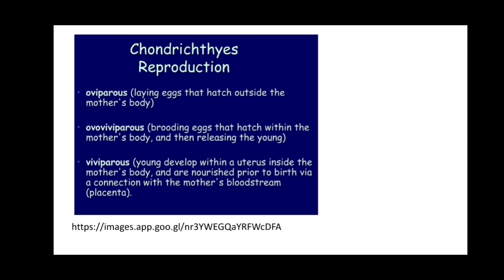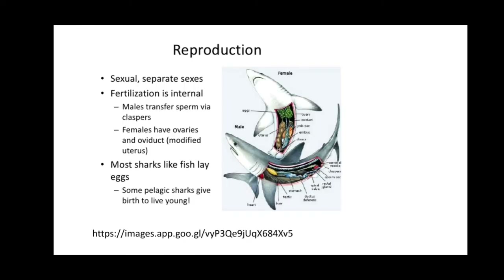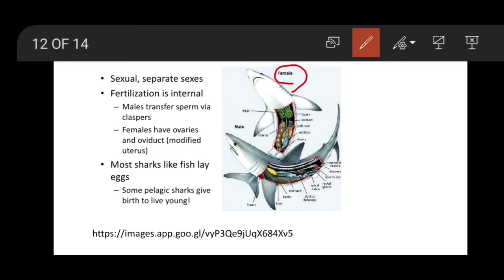Ovoviviparous organisms brood eggs that hatch within the mother's body, then release the young ones — snakes and some fishes are examples. Viviparous organisms have young that develop within the uterus inside the mother's body and are nourished via connection with the mother's bloodstream through the placenta. Male and female sexes are separate. The ovary and testes of the shark can be seen in the diagram. Fertilization is internal — males transfer sperm via claspers, and females have ovaries and oviduct as modified uterus.